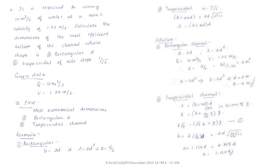What we have to find: we have to calculate the dimensions of the most efficient section of a channel. They have asked us to design the most efficient section for a rectangular channel as well as for a trapezoidal channel — the dimensions must be the most economical.